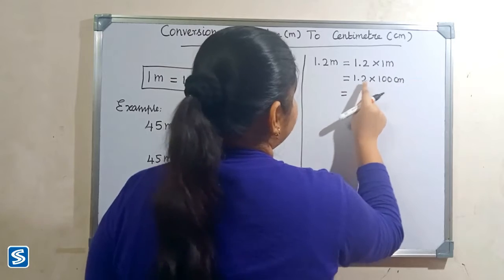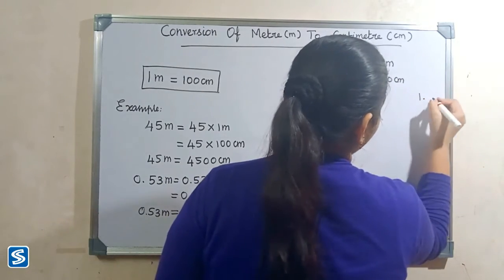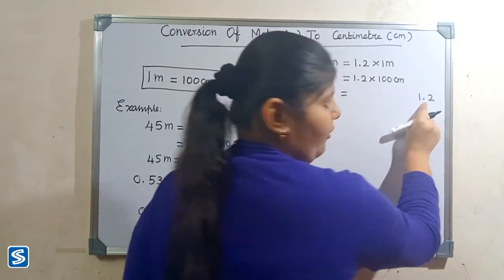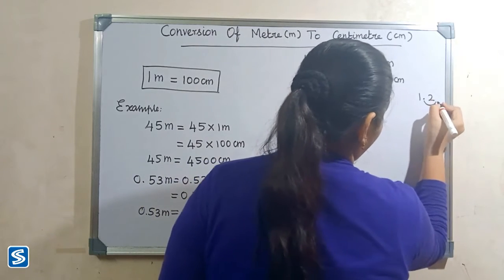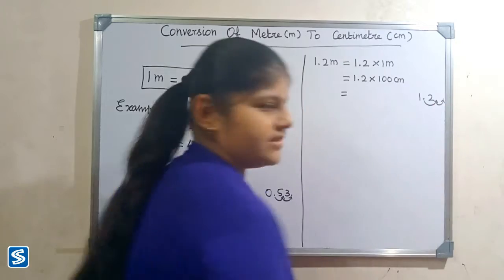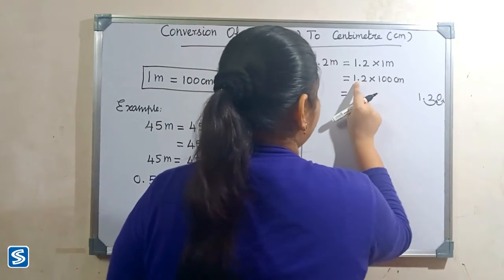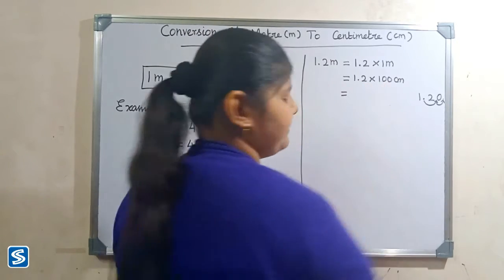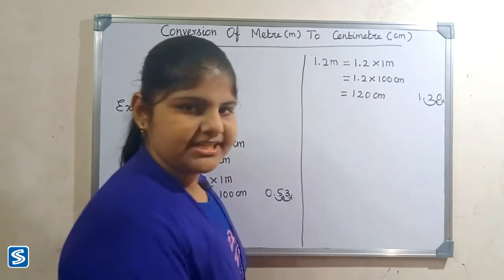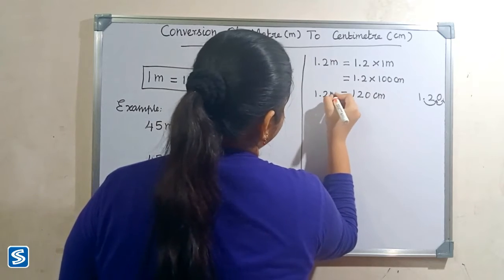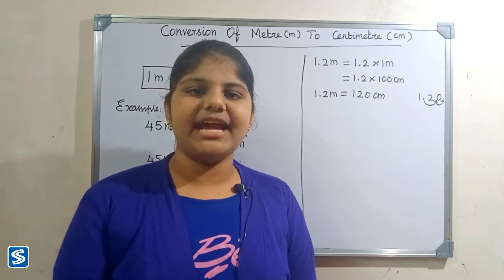The easy way to multiply a decimal number with 100 is to move the decimal point two places to the right — so 1, 2 — and fill zeros in the empty spaces. So when we multiply 1.2 with 100 centimeters, our answer will be 120 centimeters. So 1.2 meters is equal to 120 centimeters.